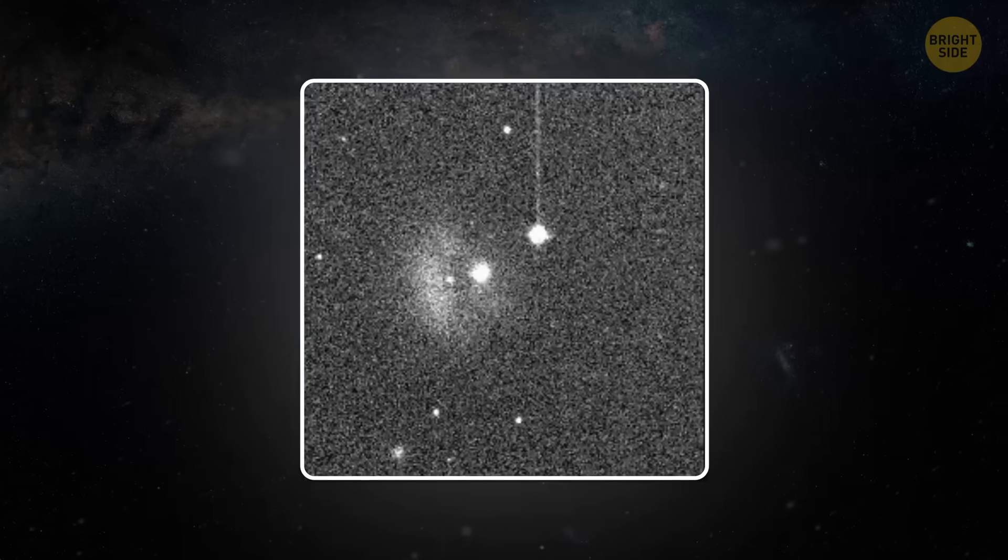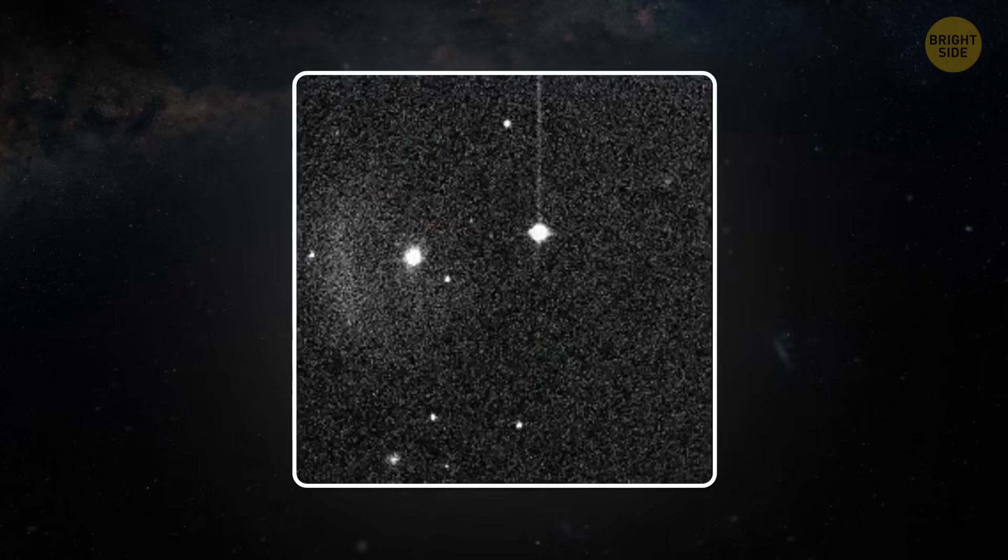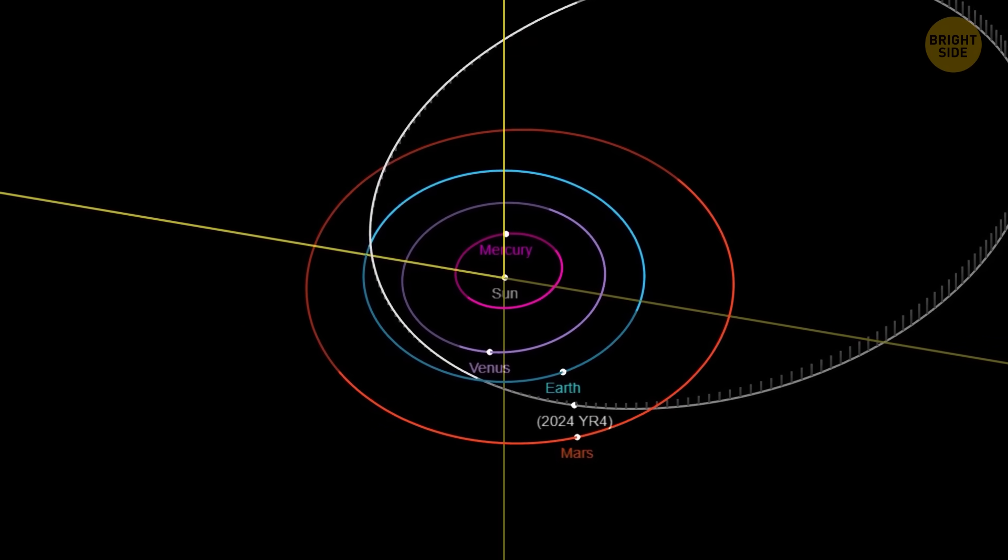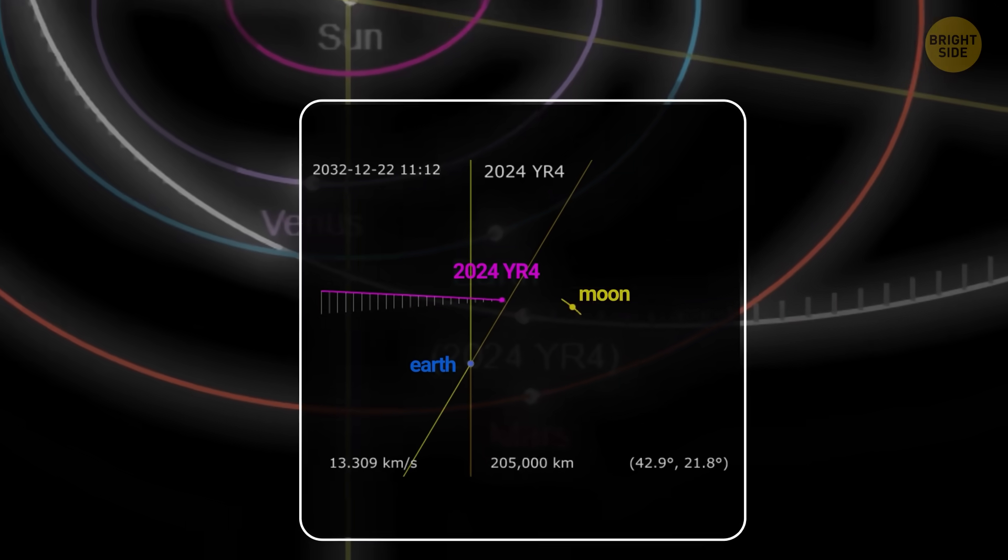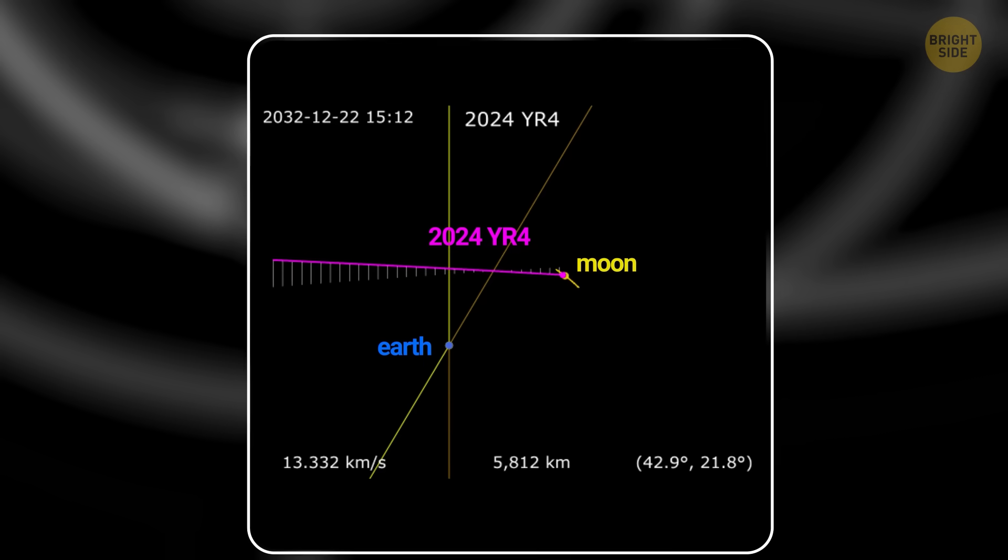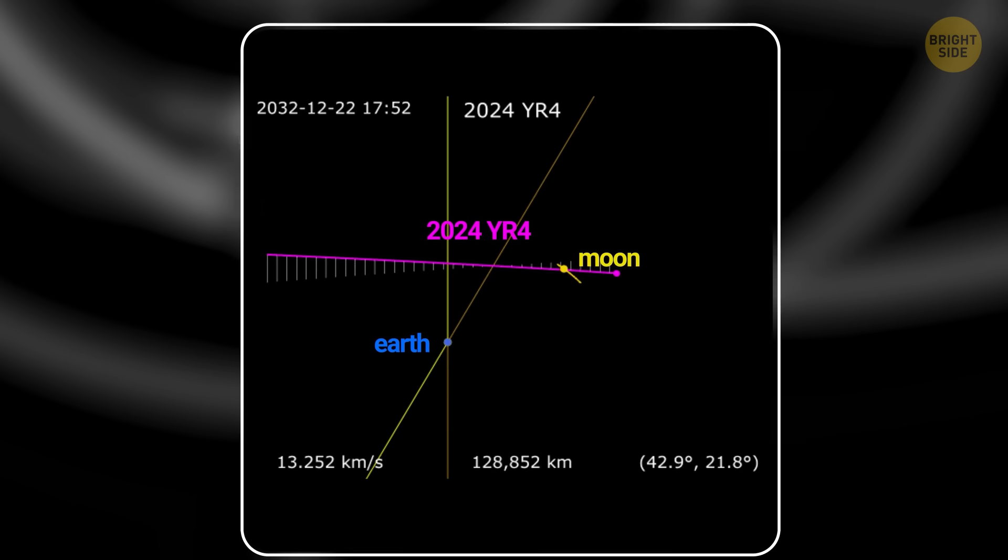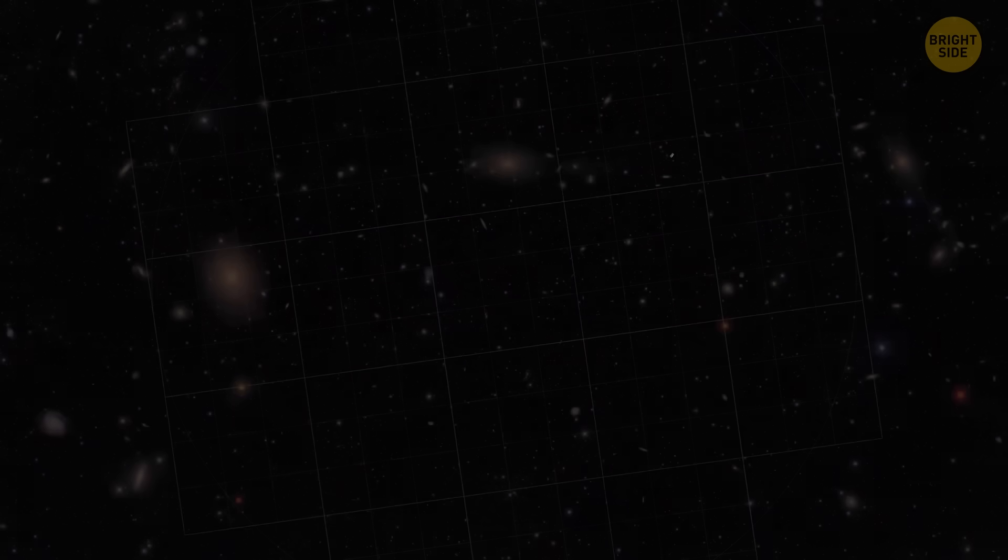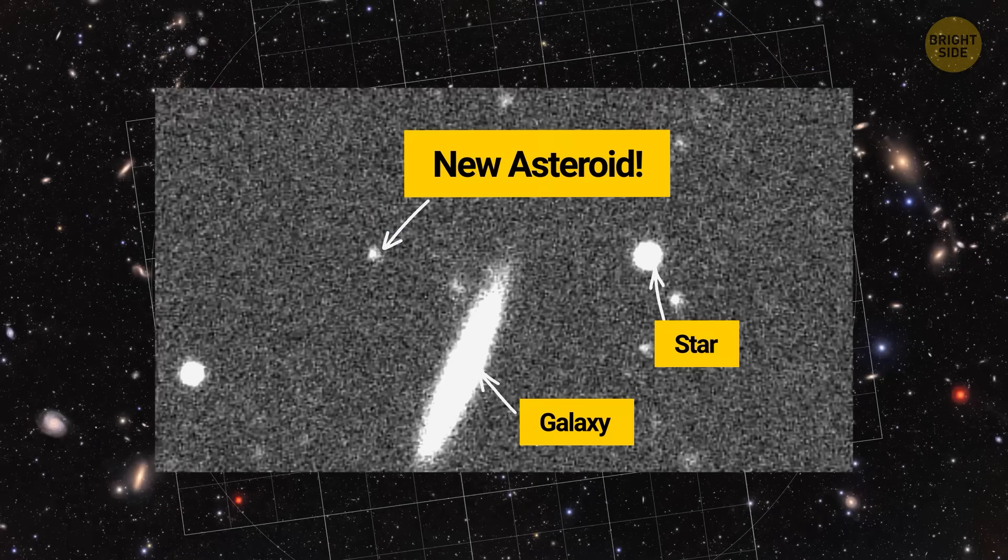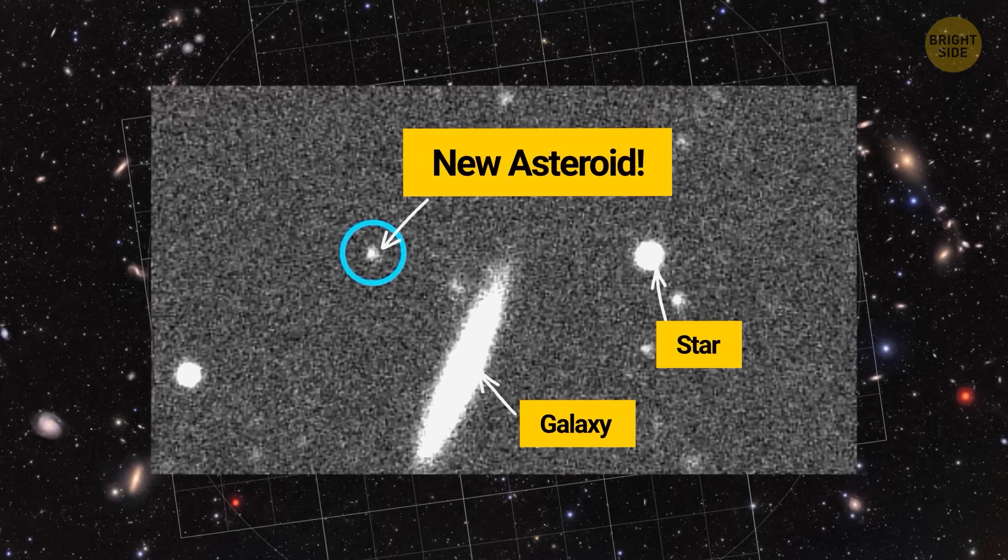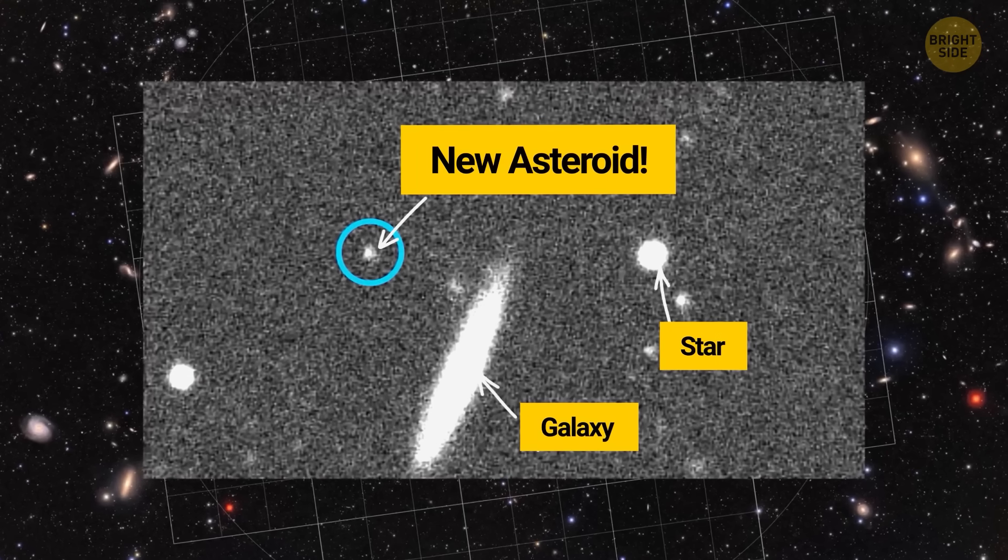That is exactly what happened with 2024 YR4, when it briefly reached level 3 on the Torino scale before better measurements calmed everyone down. The scale itself runs from 0 to 10, and anything that climbs above 3 is rare enough to raise eyebrows. The whole system works that way on purpose. Notice something strange, collect more data, then decide whether to relax or stay alert.